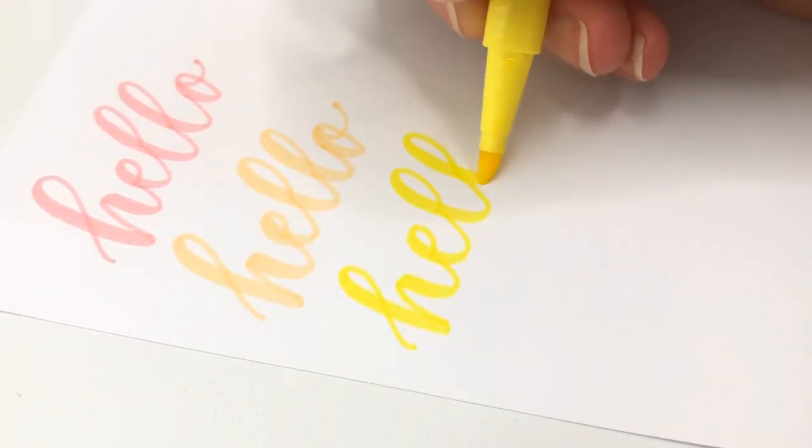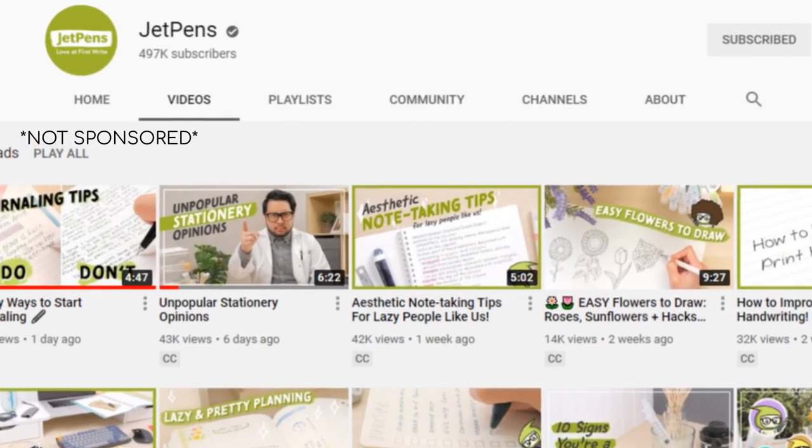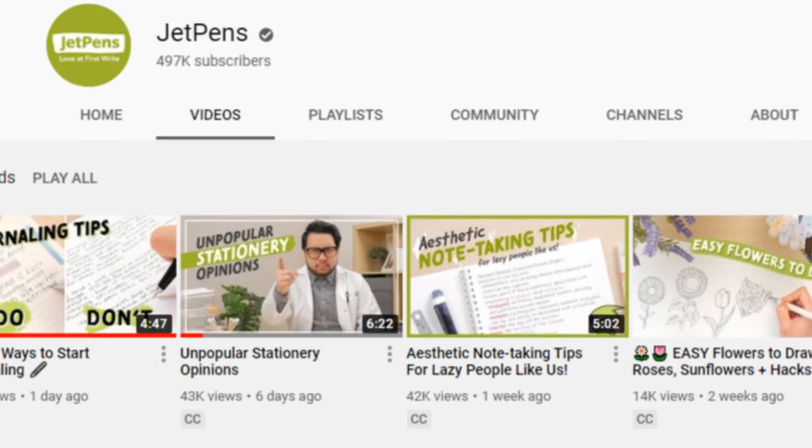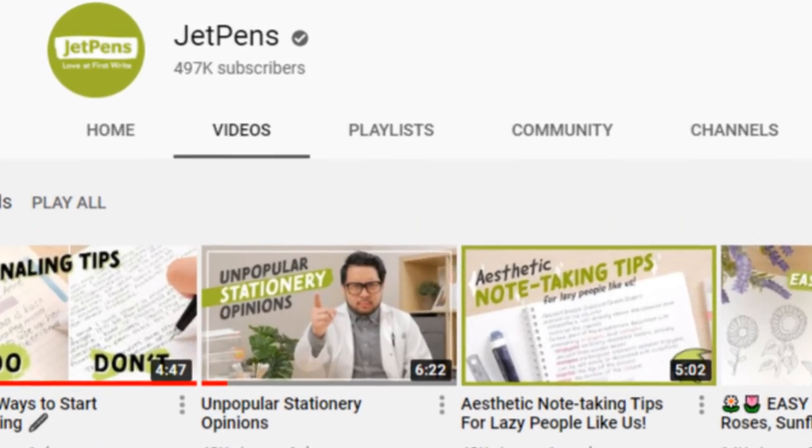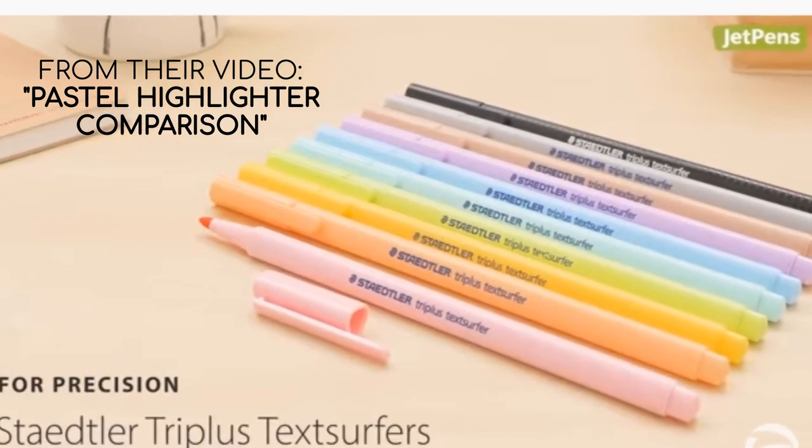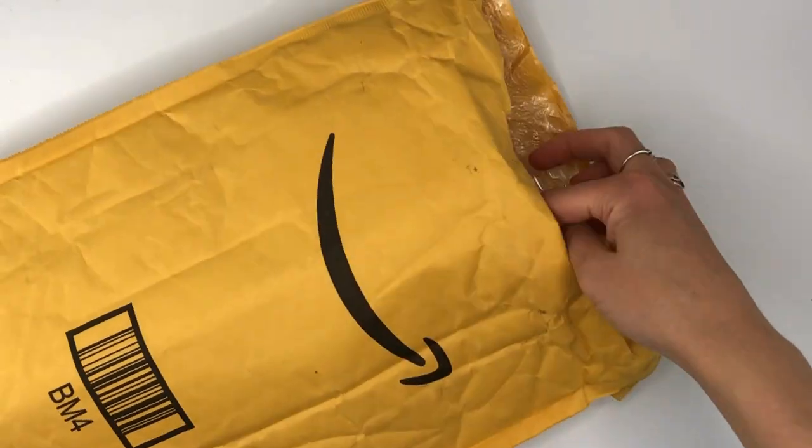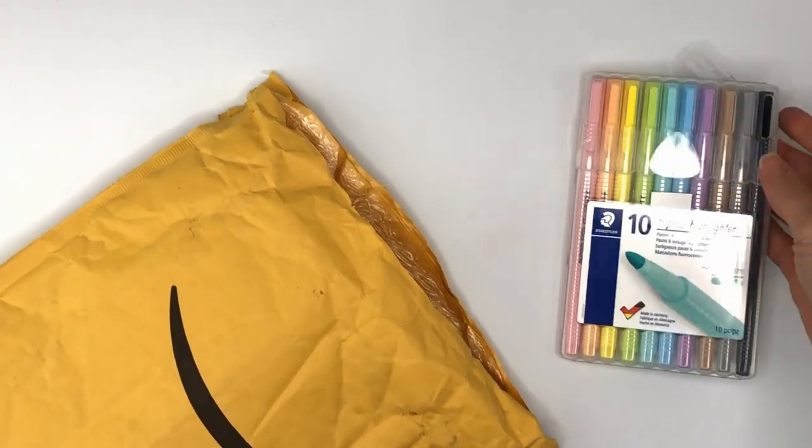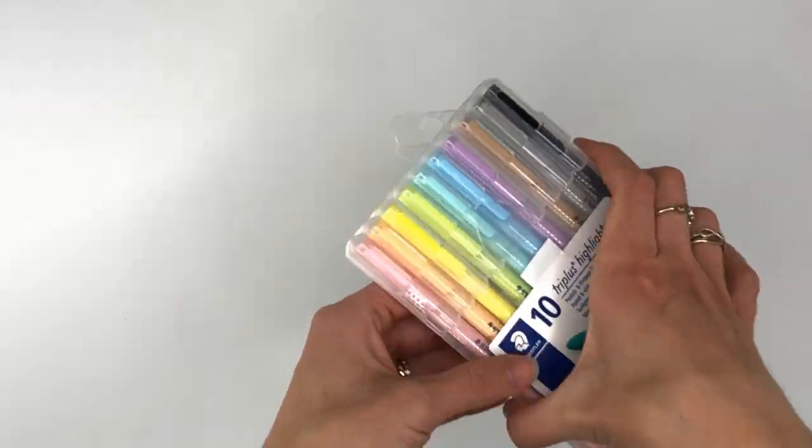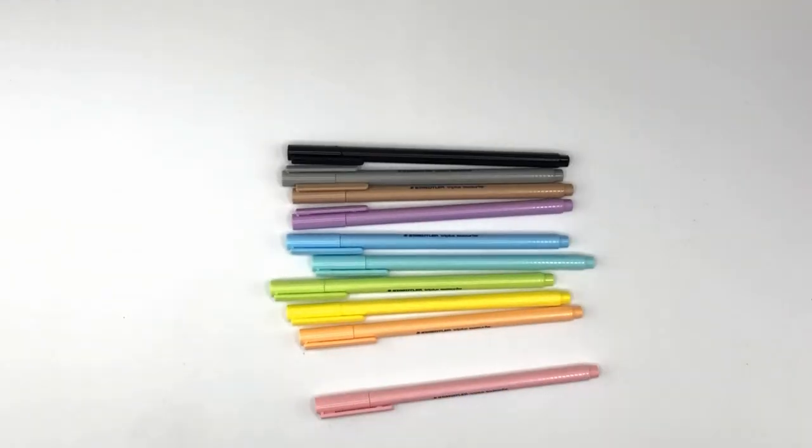But recently I was watching JetPens YouTube channel because they're my go-to resource for learning all the details about pens that I haven't tried. In their video, they mentioned these pens and how they're flexible. Hearing this reminded me of that comment from forever ago and I went on Amazon to buy them right away. When they arrived, I ripped them out of the package to try them. And sure enough, they have a flexible tip that can be used as a brush pen.